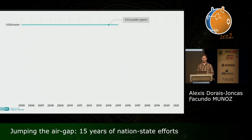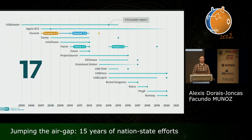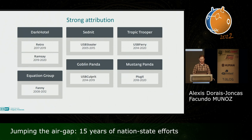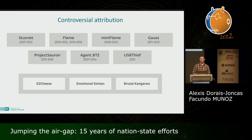We believe it all started a little over 15 years ago with APT28, who developed and used a malware called USB Stealer as early as 2005. Then followed 16 other frameworks developed by other threat actors, for a grand total of 17 up to this day. A few have been attributed with high confidence to well-known threat actors such as Dark Hotel and Mustang Panda, and we can state that they were all a product of nation-state actors — hence the title of our research: 15 years of nation-state efforts.